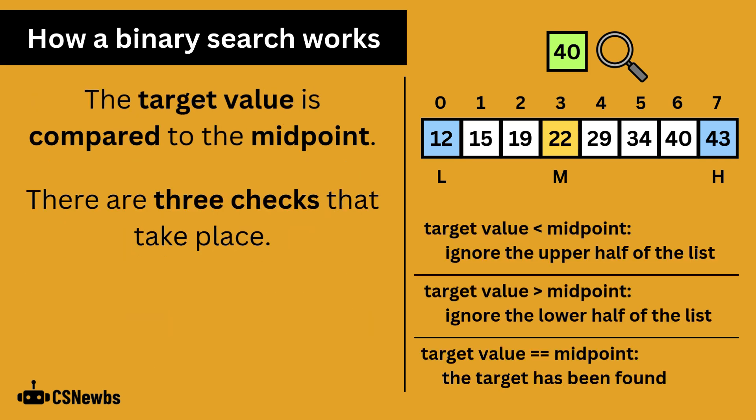The target value is compared to the midpoint and there are 3 checks that take place. If the target value is less than the midpoint, then you will ignore the upper half of the list. If the target value is more than the midpoint, then you will ignore the lower half of the list. And if the target value is the same as the midpoint, then the target has been found and the search can stop.